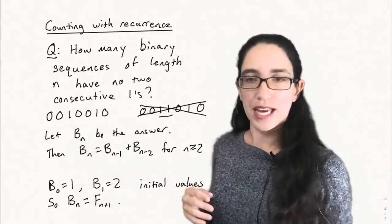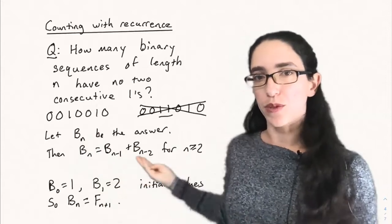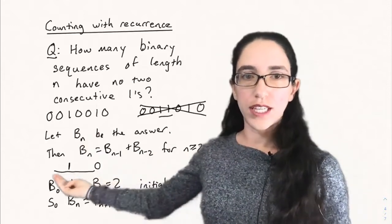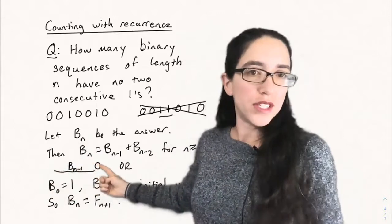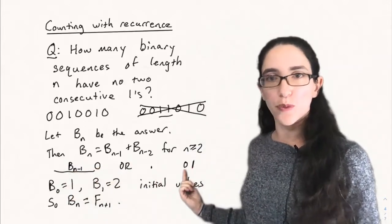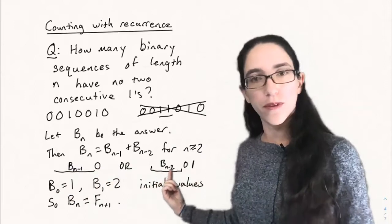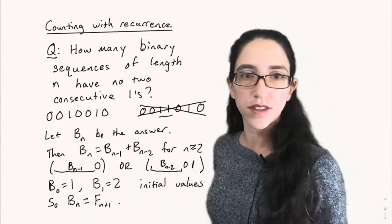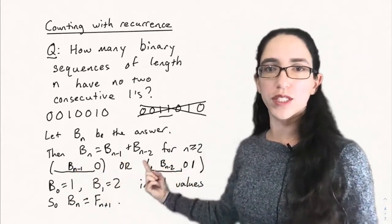Let bₙ be the answer. We can come up with a recursive formula for bₙ: bₙ equals bₙ₋₁ plus bₙ₋₂ — very Fibonacci-like. The strategy: consider sequences ending with zero. Then any sequence of length n−1 with no two consecutive ones can have a zero appended, giving bₙ₋₁ possibilities. But if it ends with one, the previous term must be zero. So it must end with '01', and the previous n−2 terms can be any of bₙ₋₂ possibilities. Every sequence is one of these two forms, so bₙ = bₙ₋₁ + bₙ₋₂.